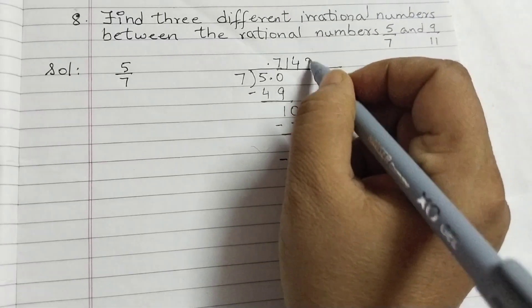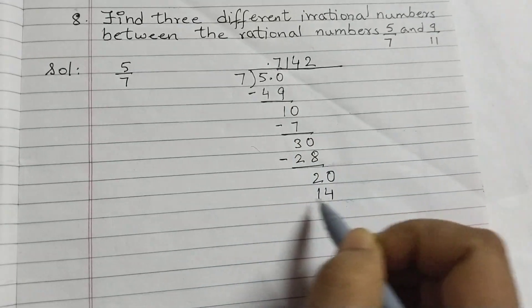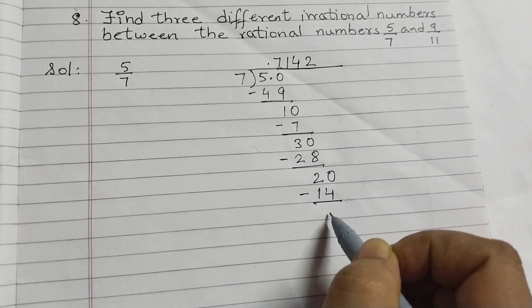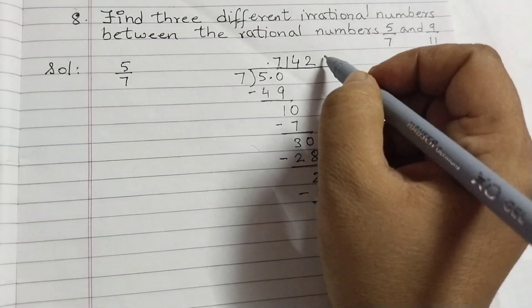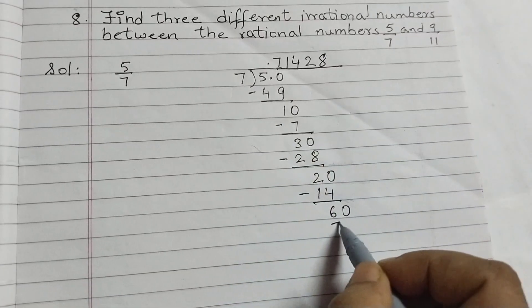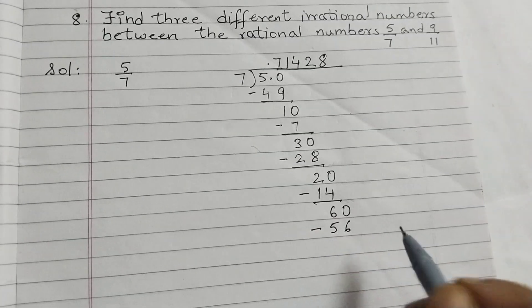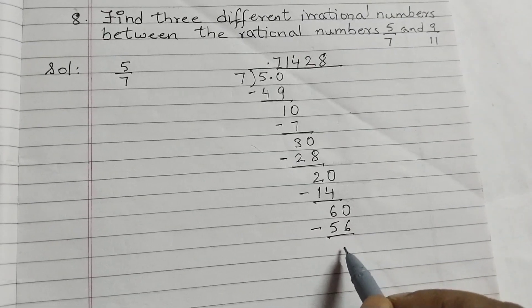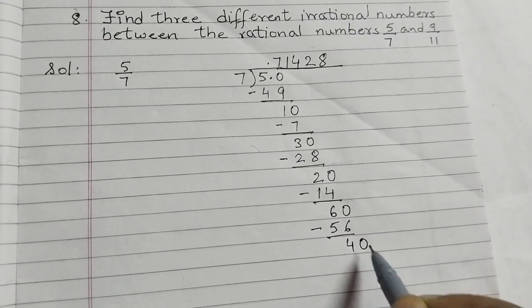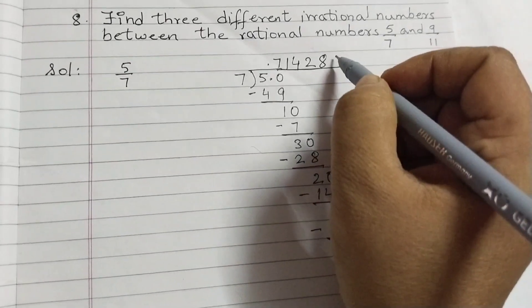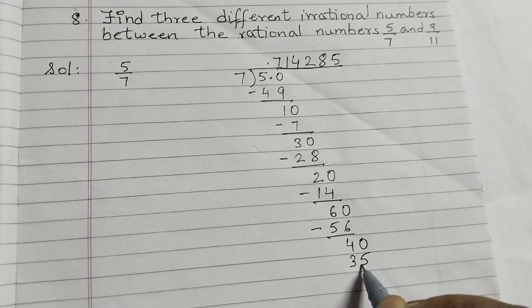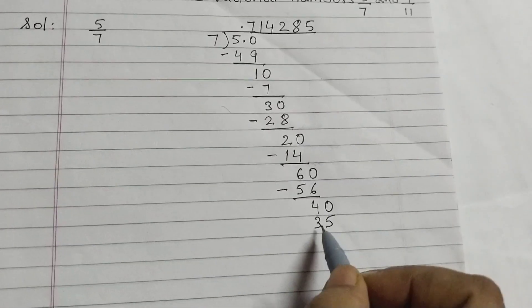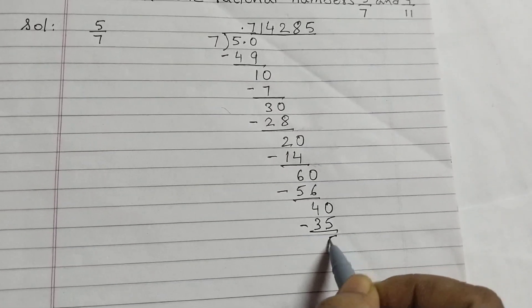7 into 2 is 14, 20 minus 14 is 6, put a 0. 7 into 8 is 56, subtract, 60 minus 56 is 4. Put a 0. 7 into 5 is 35, 40 minus 35 equals to 5.